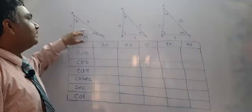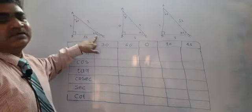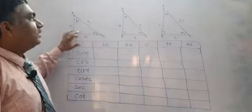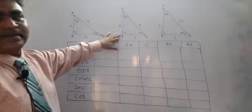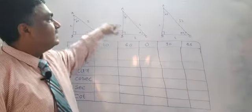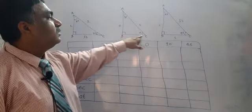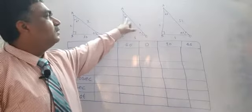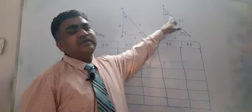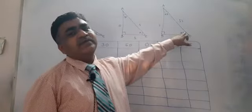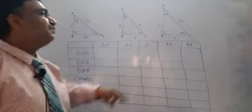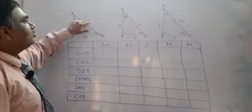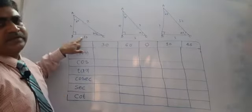Over here you can find this angle is 30, this is 60, and this is the right angle. Angle 0 and angle 90, and angle 45 and angle 45. So here we will take the values 1, 2, and root 3.